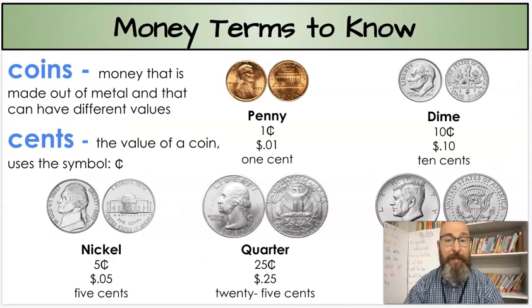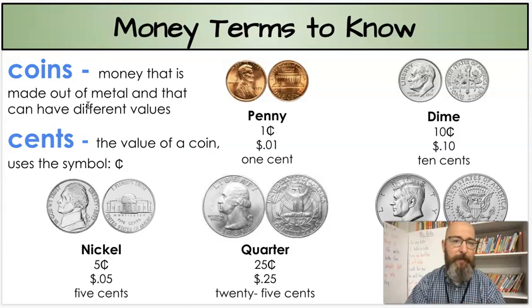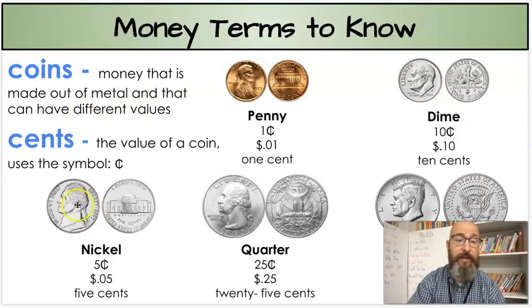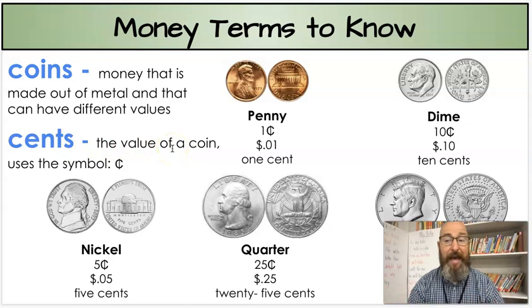Also, I want to make sure that we remember our money terms because we're still going to be dealing with coins and not really dollar bills yet. So coins, of course, are money that is made out of metal, has different values. We have different kinds of coins. And then we have cents, which is the value of a coin. How much is it worth?